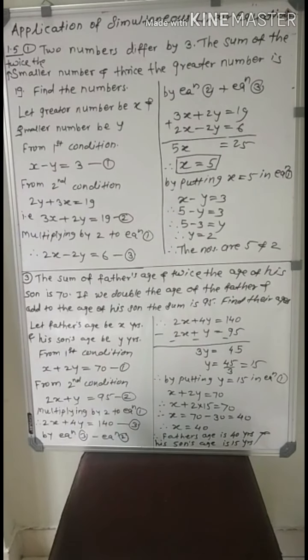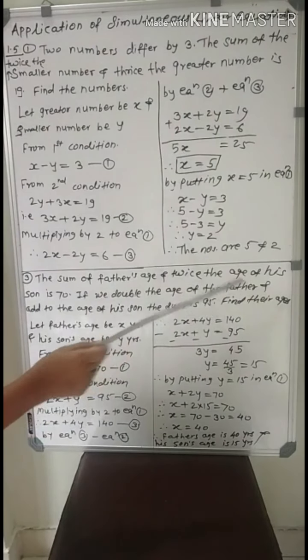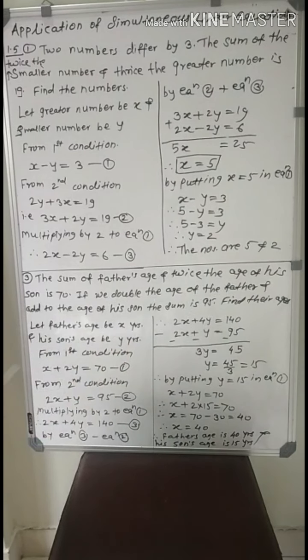Now the third example, which is based on age: the sum of father's age and twice the age of his son is 70. Second condition is, if we double the age of the father and add to the age of his son, the sum is 95. Find their present ages. Here present age of father and son is asked. So let father's age be x years, and his son's age be y years.